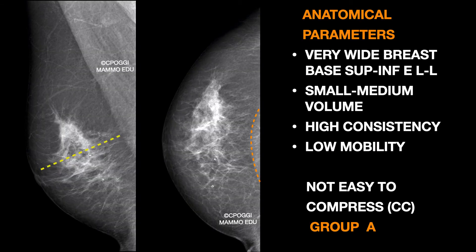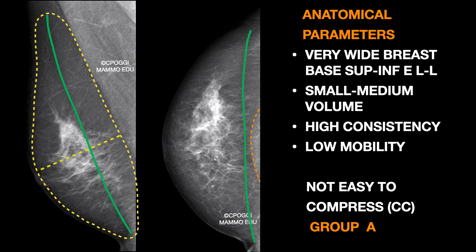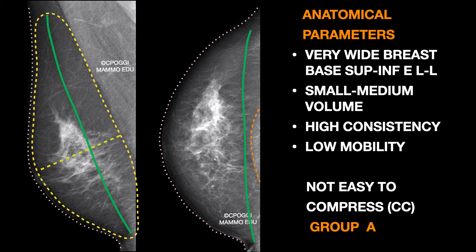Group A presents a very wide footprint in the superior-inferior direction, and in the mediolateral direction too. Generally it has more volume. The consistency is high — it's almost hard to detach. That is to say it is not manipulatable, not mobile. Not easy to be compressed either, mainly for the CC projection. The skin could have a strong impact on the compression force to be used in this group.